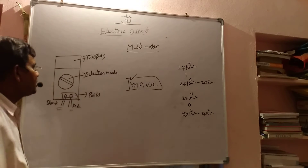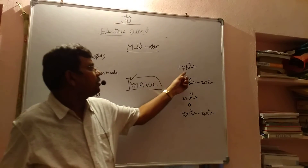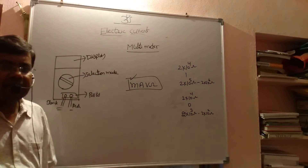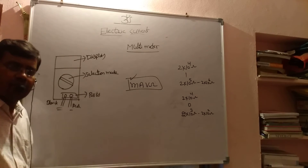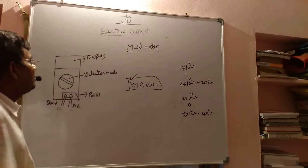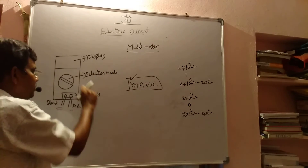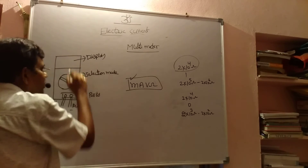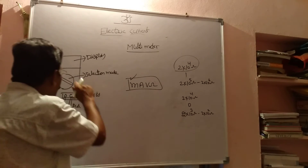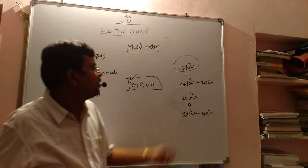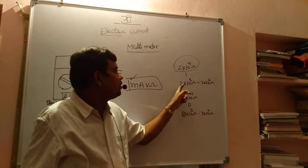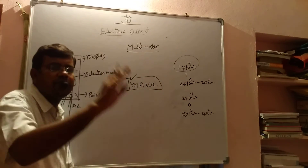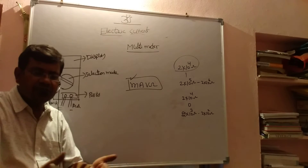How to find ohm: initially I am adjusting the selection mode to 2×10⁴ ohms. At that time, on the display, one or zero comes. For example, when I am adjusting the selection mode to ohm and the port also to ohm, by adjusting to 2×10⁴ ohms initially, I got one on the display. At that time I am increasing the ohms from 2×10⁵ ohms to 2×10⁶ ohms. In between that adjustment we are getting the resistance in the circuit.